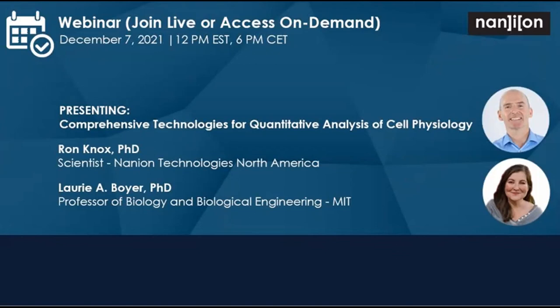The other thing that is very attractive to academics now is the SynchroPatch and also the Patch Liner are so amenable to doing current clamp measurements. That allows people, for example, who are working on neurons — of any description, whether in the brain or sensory neurons — and also cardiomyocytes, to record action potentials, which is clearly the phenotypic output you're really interested in within these cell preparations. There's a lot of really nice validation going on both at Nanion and with our collaborators in that area. That's something that I think is very exciting to the academic community, knowing that they could deploy the technology in that way as well.